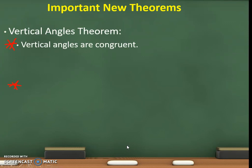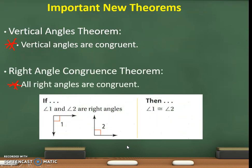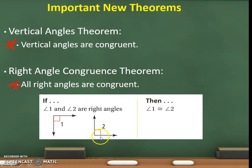Important new theorems. Vertical angles theorem: vertical angles are congruent. Right angle congruence theorem: all right angles are congruent. We need to know these two important theorems. Vertical angles are the ones across from each other — they're always congruent. All right angles are congruent because they're both 90 degrees. So if angle 1 and angle 2 are right angles, then angle 1 is congruent to angle 2.